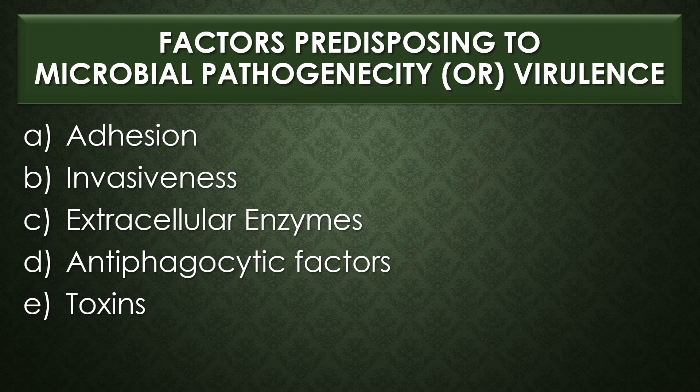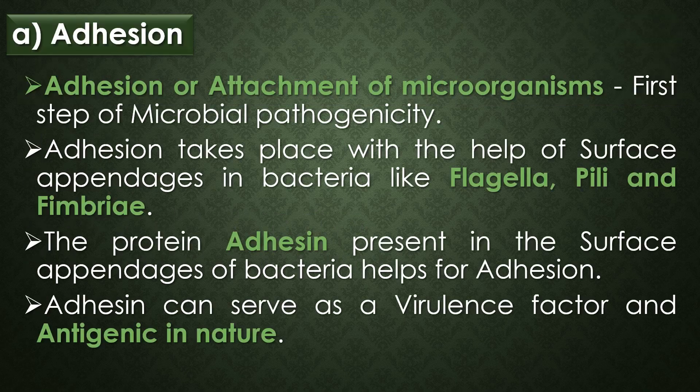They are adhesion, invasiveness, extracellular enzymes, antiphagocytic factors like capsules and antiphagocytic chemicals, and toxins like exotoxins and endotoxins. The first virulence factor is adhesion. Adhesion or attachment of a microorganism is the first step of microbial pathogenicity. Adhesion mainly takes place with the help of surface appendages in bacteria like flagella, pili and fimbriae, and the protein adhesins present in the surface appendages of bacteria help for the adhesion or attachment process. The adhesins can serve as a virulence factor and are antigenic in nature.